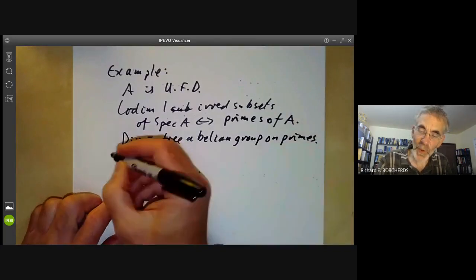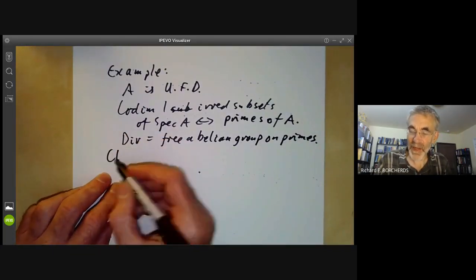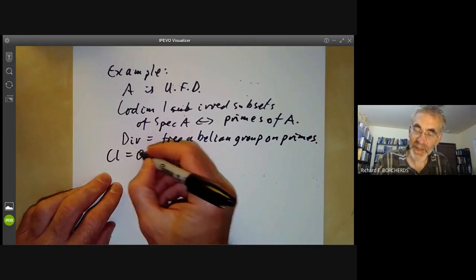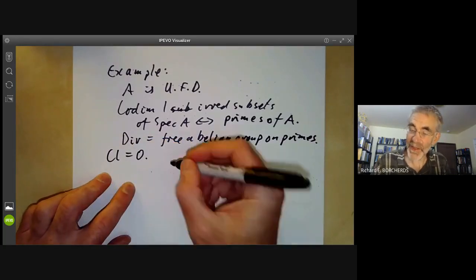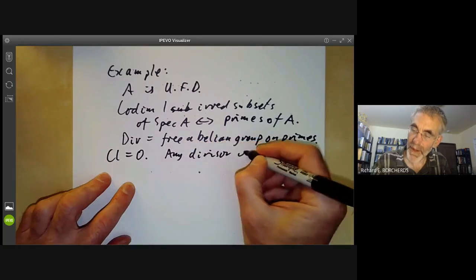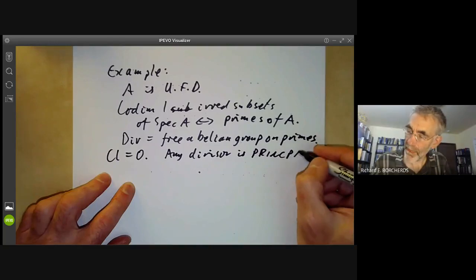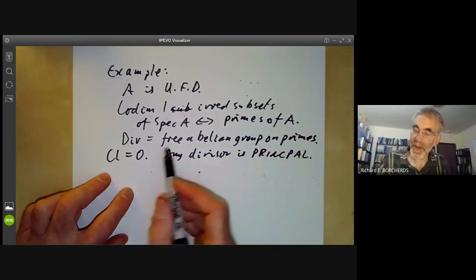So the group of divisors is just the free abelian group on the primes. And now we can work out the group of divisor classes. The group of divisor classes is just zero, because any divisor is principal.